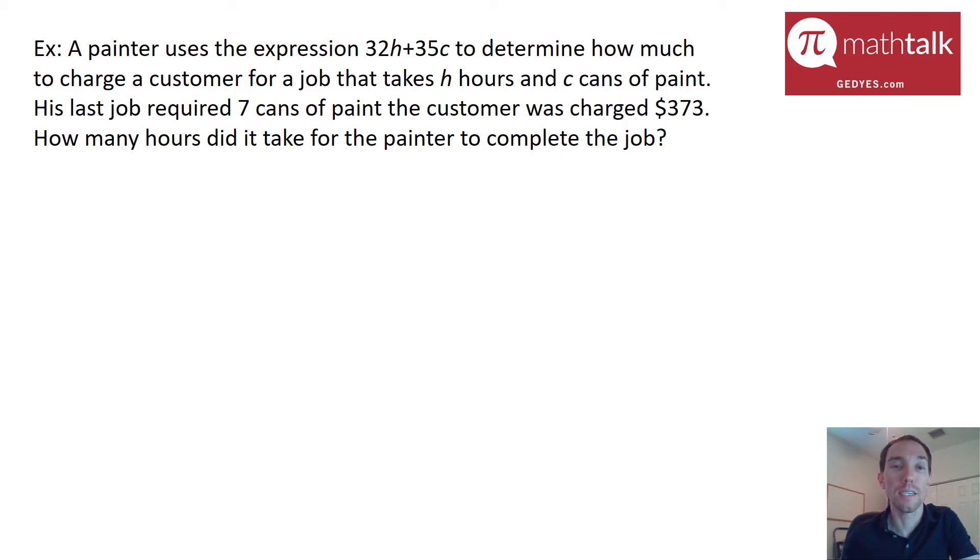In this case we're using the same equation but we're given two different variables and they ask us to solve for something other than the price. So in my equation we have P or the price equals 32H plus 35C but this time they tell us the price and they tell us the number of cans of paint and they want us to figure out how many hours it took.